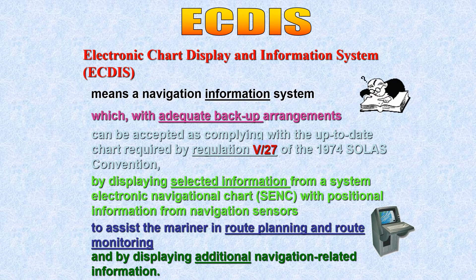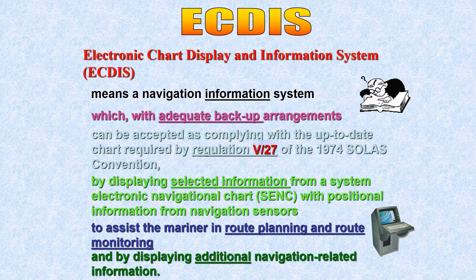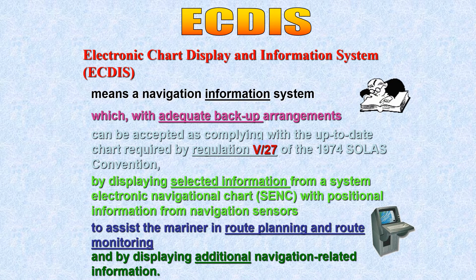ECDIS should have adequate backup arrangements. This backup requirement was never there for paper charts — with paper charts there was no need for backup, but with ECDIS you do. That backup could be a paper chart, another ECS or ENC-based system, or another ECDIS. We'll discuss in detail how an ECDIS can be considered a backup in a separate video.